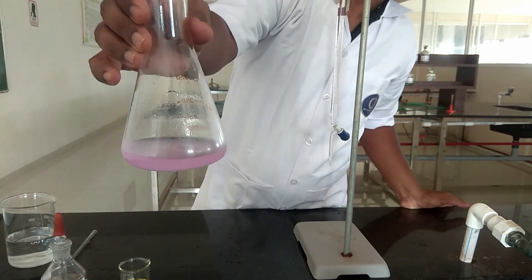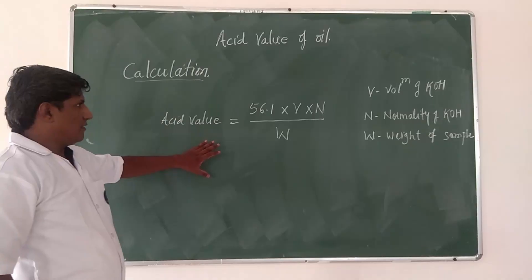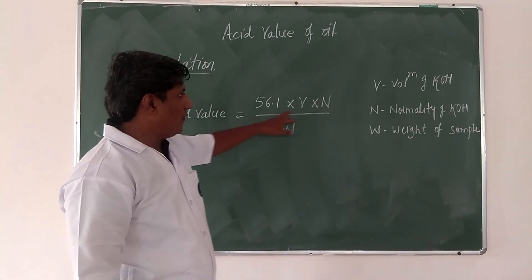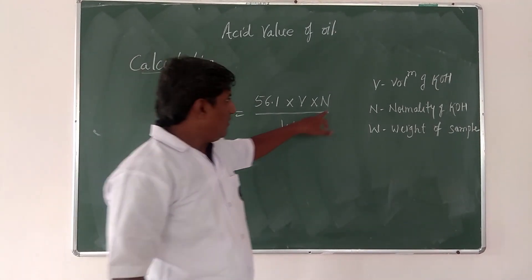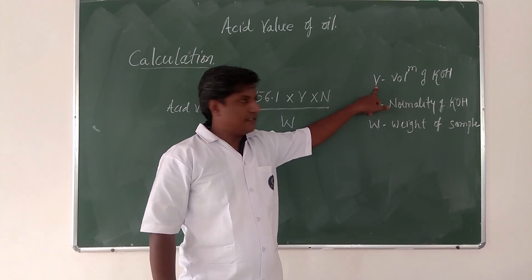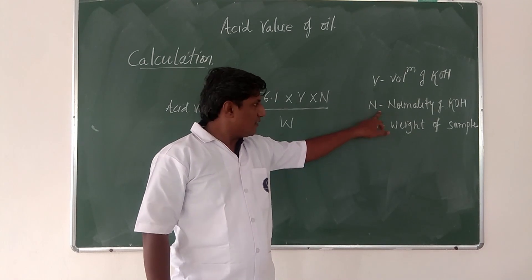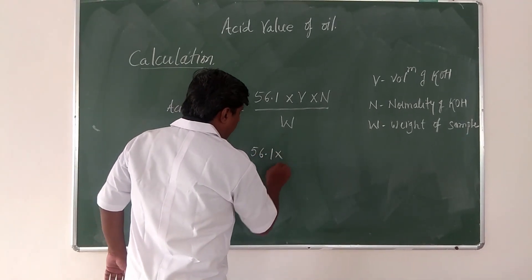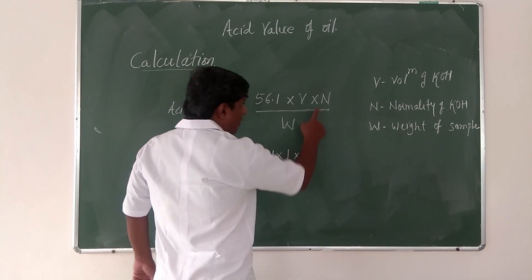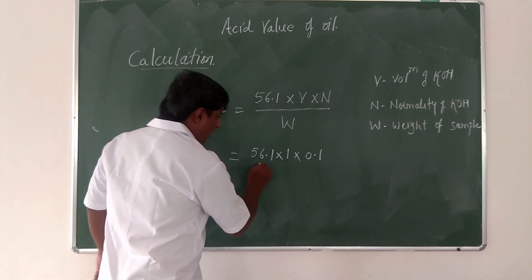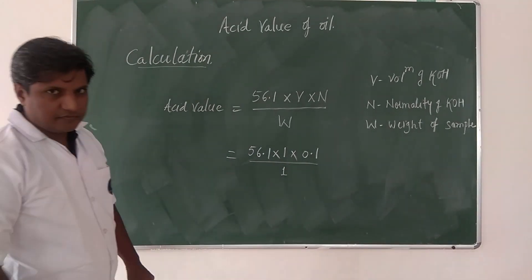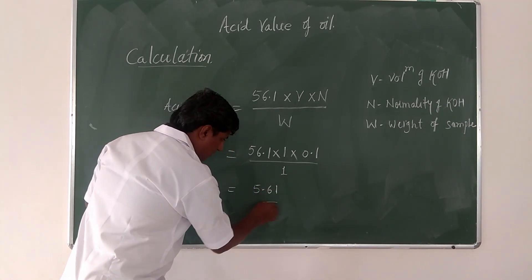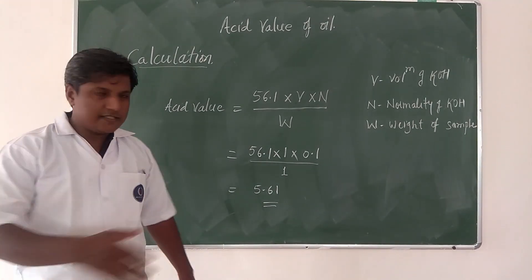This is how we calculate acid value using the formula: 56.1 × V × N divided by W, where V is the volume of potassium hydroxide required for neutralization, N is the normality of potassium hydroxide, and W is the weight of the sample. Putting in the values — volume 1 ml, normality 0.1, weight 1 gram — the answer is 5.61. So the acid value of our sample is 5.61.